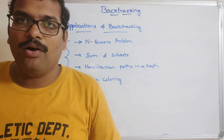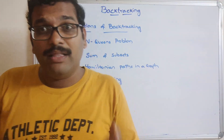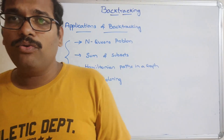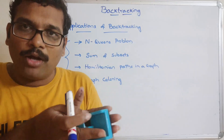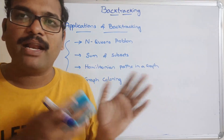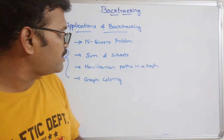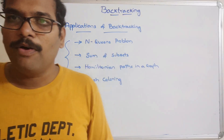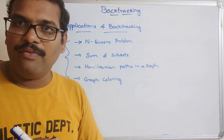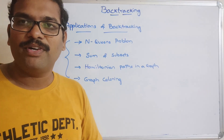Backtracking is similar to dynamic programming — in dynamic programming we also solve optimization problems. The one key difference is that in backtracking, if the current path is not suitable we can backtrack and choose an alternate path. In our further sessions we will go into the applications, the N-Queens problem, and the sum of subsets problem. Feel free to post doubts in the comment section, like and share the session, and subscribe to the channel. Thanks for watching!